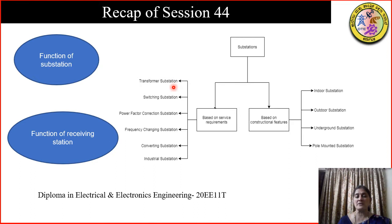Based on service requirement, we had transformer substation, switching substation, power factor correction substation, frequency changing substation, converting substation, and industrial substation. The industrial substation is for individual industrial consumers. The converting substation converts AC to DC. The frequency changing substation changes the frequency. The power factor correction substation works on improvement of power factor. The switching substation is for switching purposes and the transformer substation changes the voltage level.